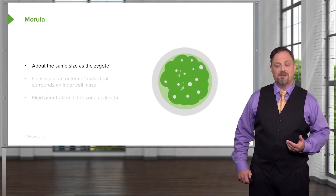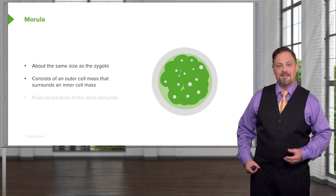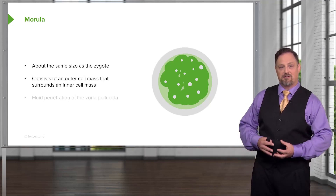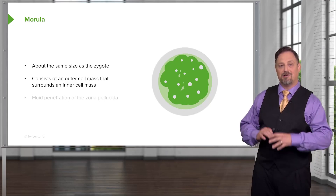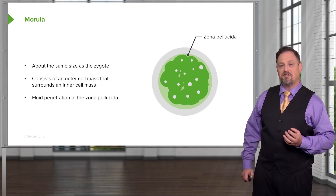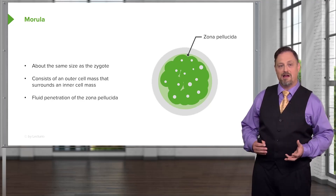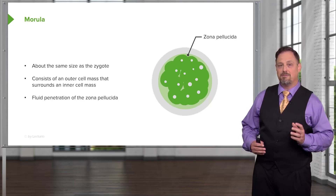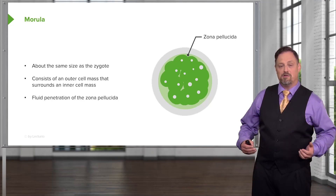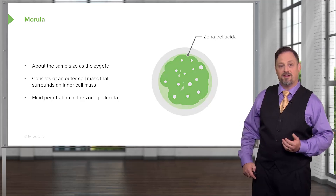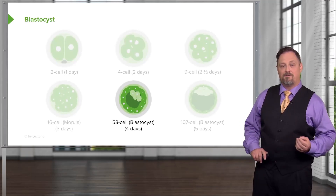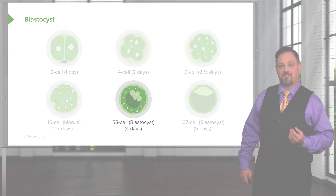At this time, we have something about the same size as the zygote, consisting of a group of cells clustered in the center — the inner cell mass — and a surrounding outer cell mass. During this time, the protective barrier around the developing zygote and morula, the zona pellucida, begins to break down and fluid begins to permeate into the spaces between these cells. Thereafter, we move to a stage called the blastocyst. The fluid creates a cavity called the blastocyst cavity, and the entire assembly of fluid and cells is referred to as the blastocyst.